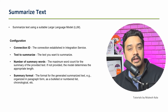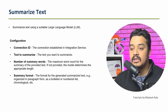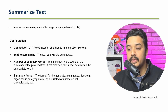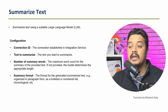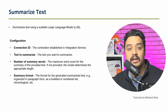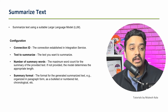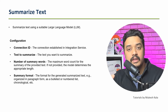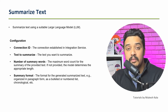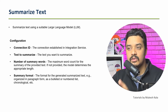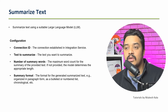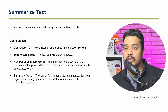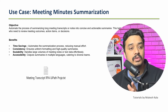You also have an option called Summary Format — do you want the output as a paragraph, a bulleted list, a numbered list, or in chronological order, in case you are following some kind of series or events. All of these are the inputs to this activity. It is a pretty straightforward activity called Summarize Text. Before going to Studio, let's look at a quick use case.